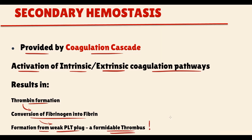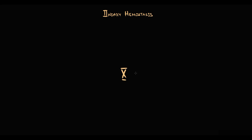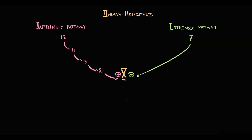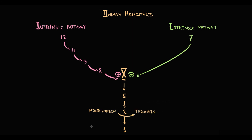The central factor of the coagulation cascade is Factor 10. The goal of both the intrinsic and extrinsic coagulation pathways is to activate Factor 10. The intrinsic pathway consists of factors 12 through 8, and the extrinsic pathway consists of just Factor 7. Activation of Factor 10 results in activation of factors 5, 2, and 1 — easy to remember because 5 times 2 is 10, and 2 times 1 is 2. Factor 2, called prothrombin, becomes thrombin upon activation. Factor 1, called fibrinogen, becomes fibrin upon activation.